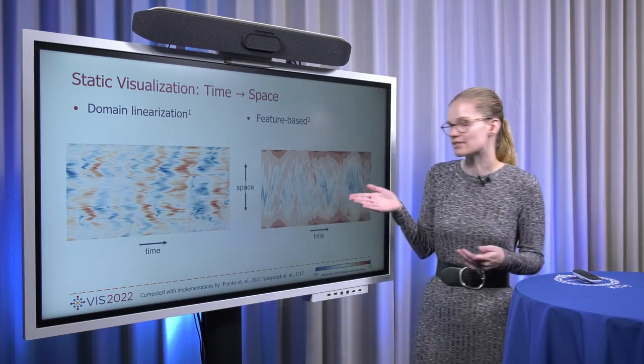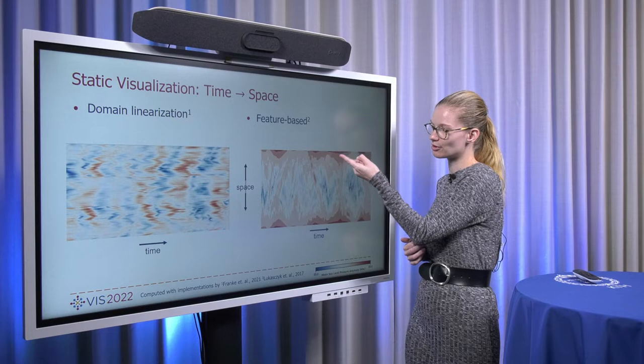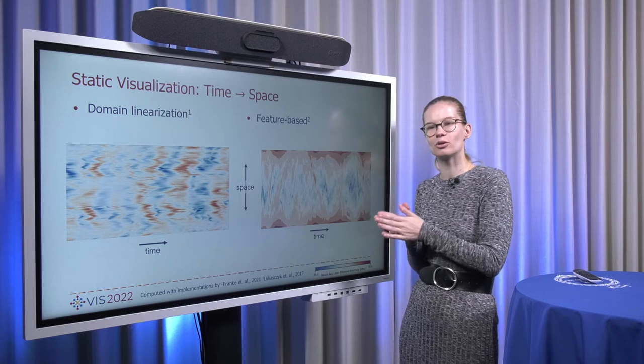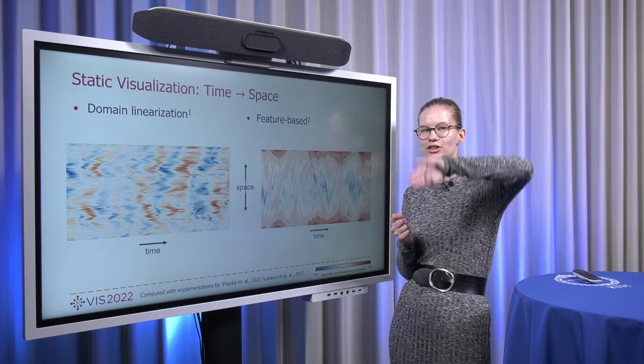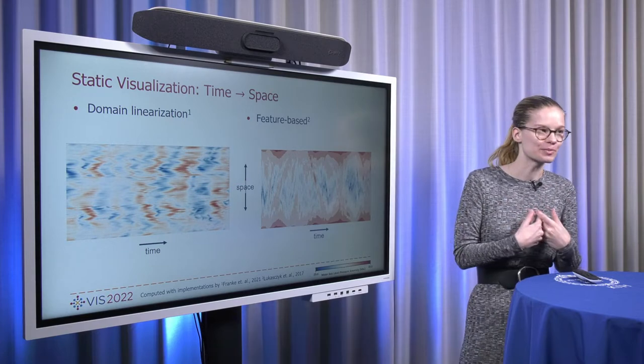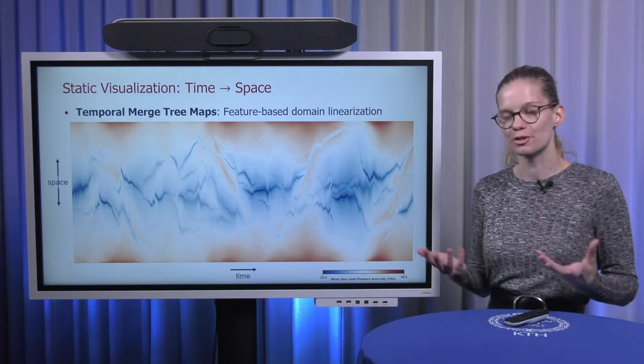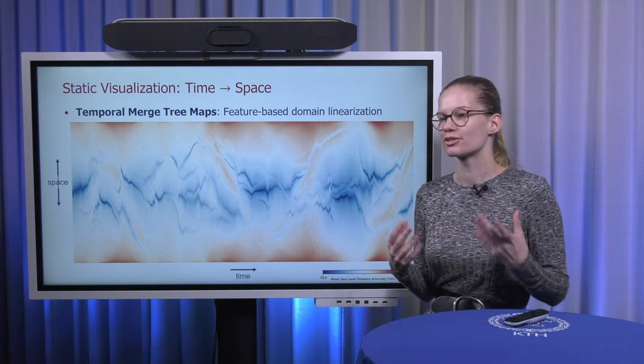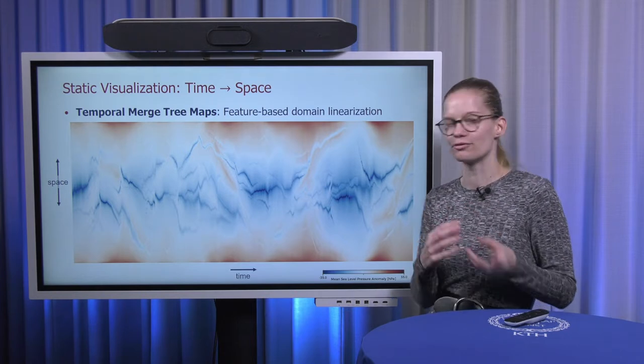And in the feature-based visualization, we lost some information. For example, if we look at these two areas here, then we know that there is a size change, but we don't know if the transition in value is just static linear or if it's a really sharp curve. So we want to combine the best of two worlds basically and create a new visualization that we call temporal merge tree maps that is essentially based on a feature-based domain linearization, iterating over all of the vertices in some way that retains all of the features as well.